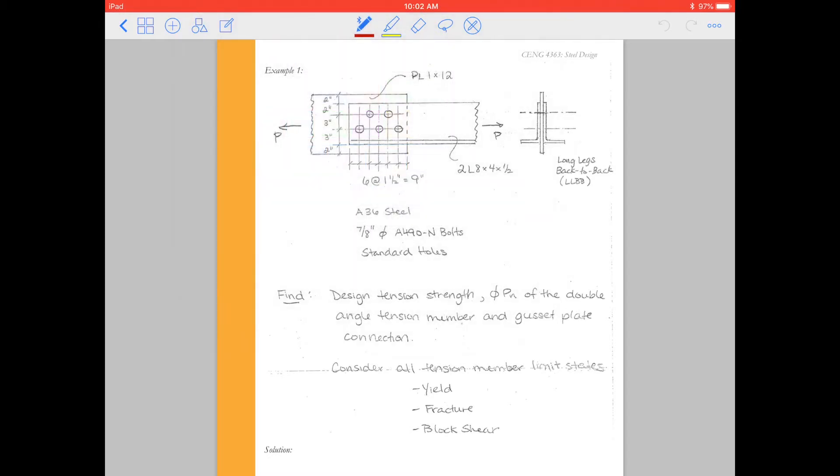So we see here we have that labeled. Long legs back-to-back, so that means the 8 inch leg is going to be in the vertical direction here. And we have the connection. We have the bolt pattern. It looks like a staggered bolt pattern.